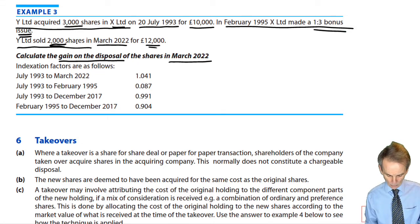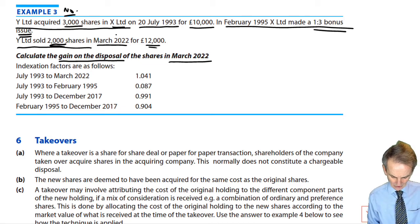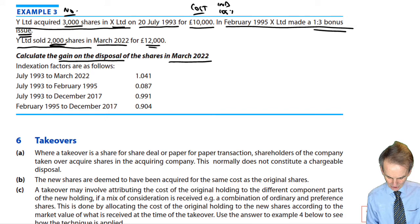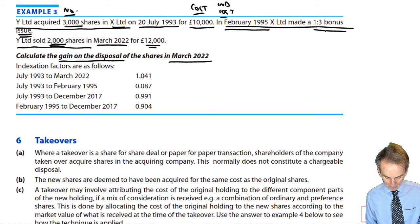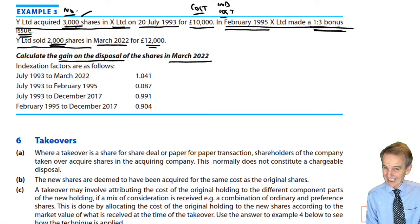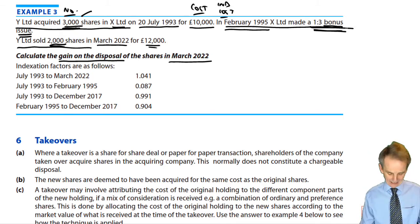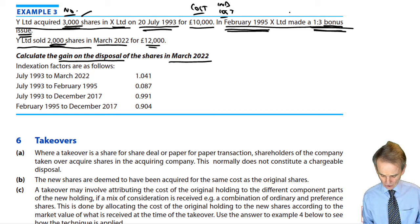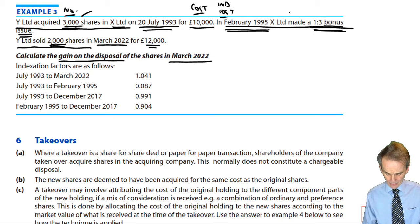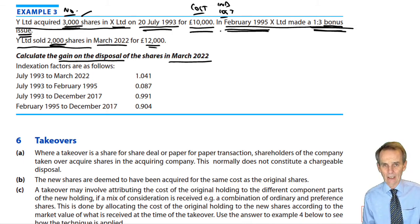In February 1995, X Limited made a 1-for-3 bonus issue. 1/3 of 3,000 is 1,000 extra shares. But it's a bonus issue, so there is no re-indexation from when you bought the shares in July 1993 to the date of the bonus issue. We simply add the extra 1,000 shares acquired. That means we now own 4,000 shares still deemed to cost £10,000 with an index cost of £10,000.